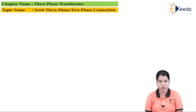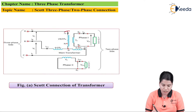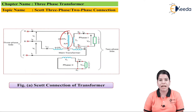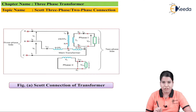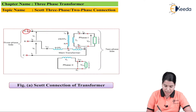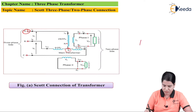Let us study the position of the neutral point. When the teaser transformer windings are connected in a 3-phase 4-wire system, the neutral point N is provided at the primary side of the teaser winding. As seen in the figure, this is the primary winding of the teaser transformer, and N is the neutral point provided in the primary winding. The total winding AD is divided into 2 parts: AN plus ND.